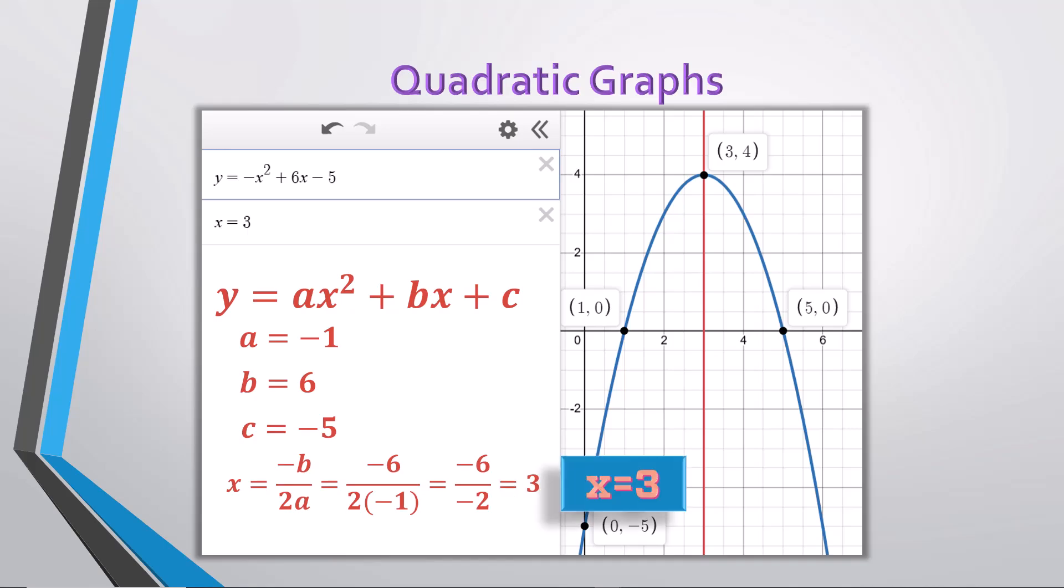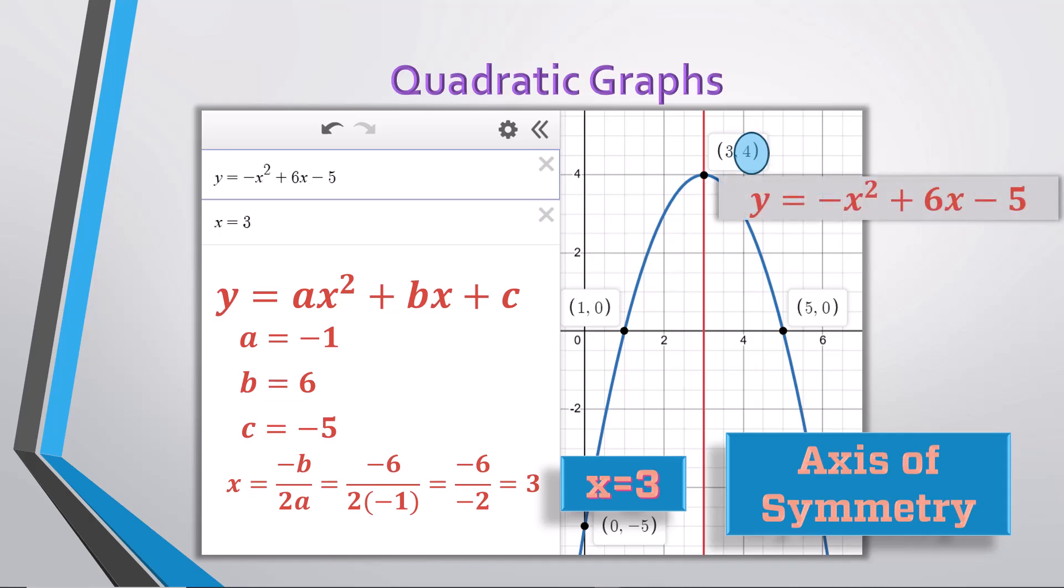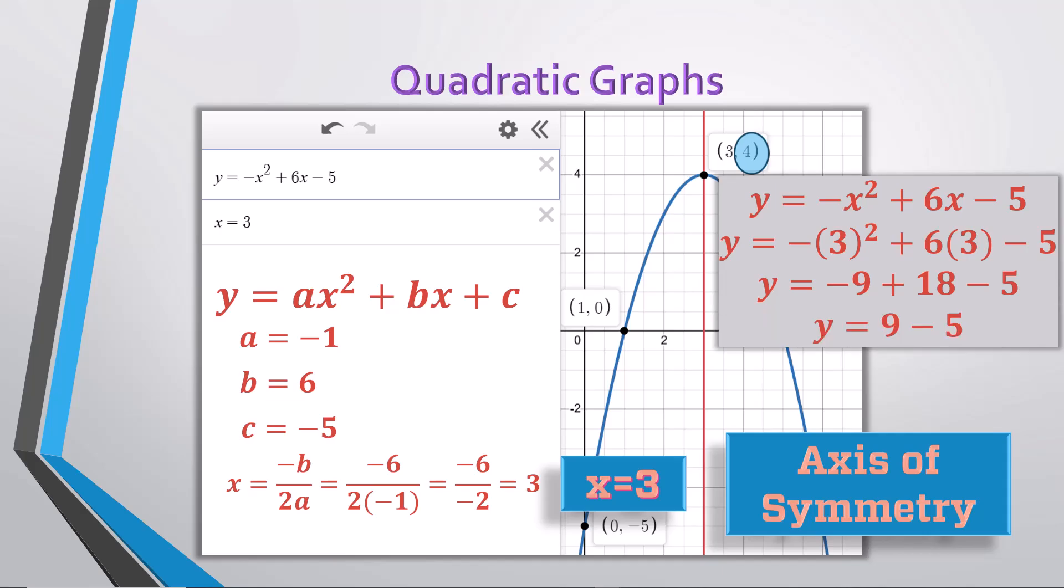This is the equation for the axis of symmetry and the x-value of the vertex. To find the y-value of the vertex, simply substitute the x-value into the equation and solve for y. Negative 3 squared plus 6 times 3 minus 5, which simplifies to negative 9 plus 18 minus 5, which simplifies to 9 minus 5, and finally, y equals 4.